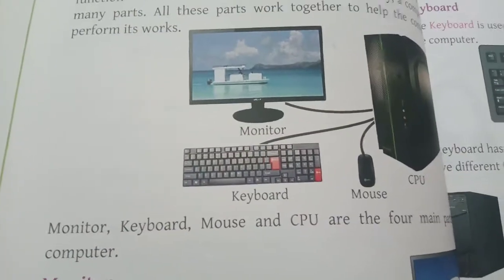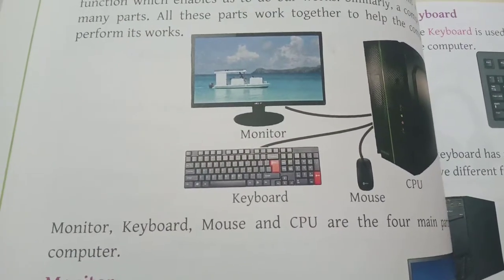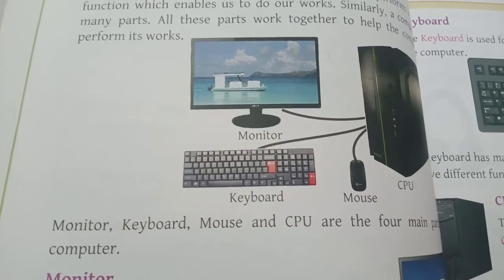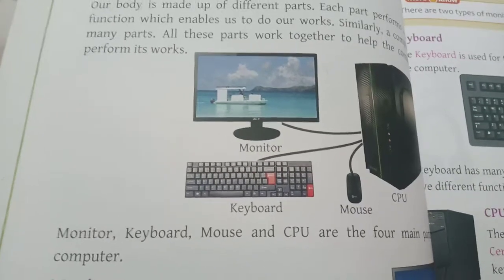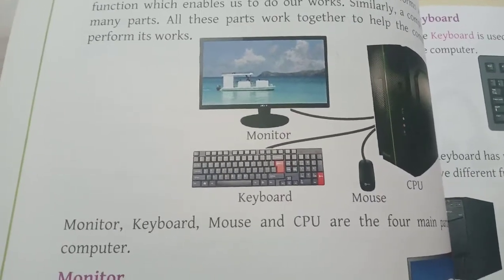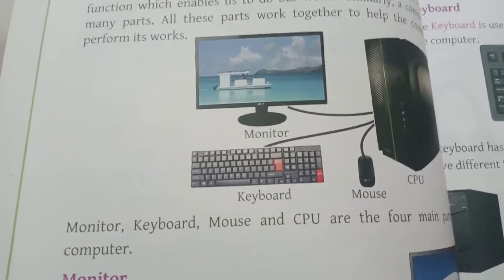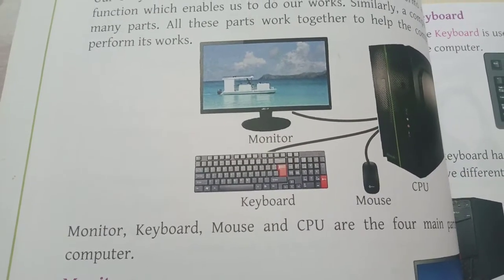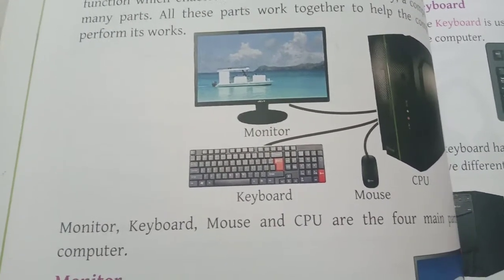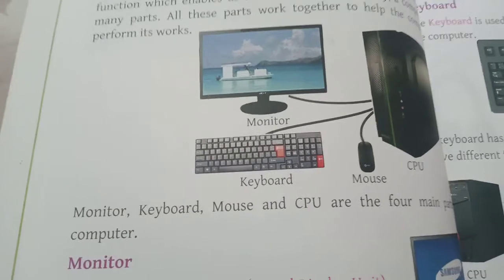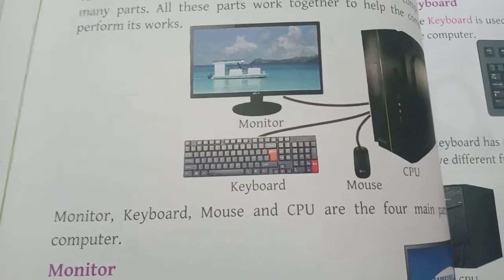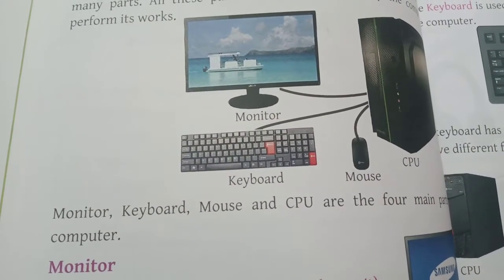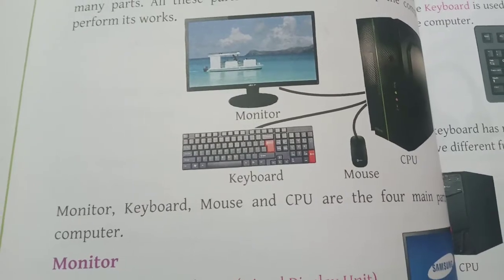The parts of a computer are monitor, keyboard, mouse, and CPU. Monitor means the screen — that screen we are using is called a monitor.